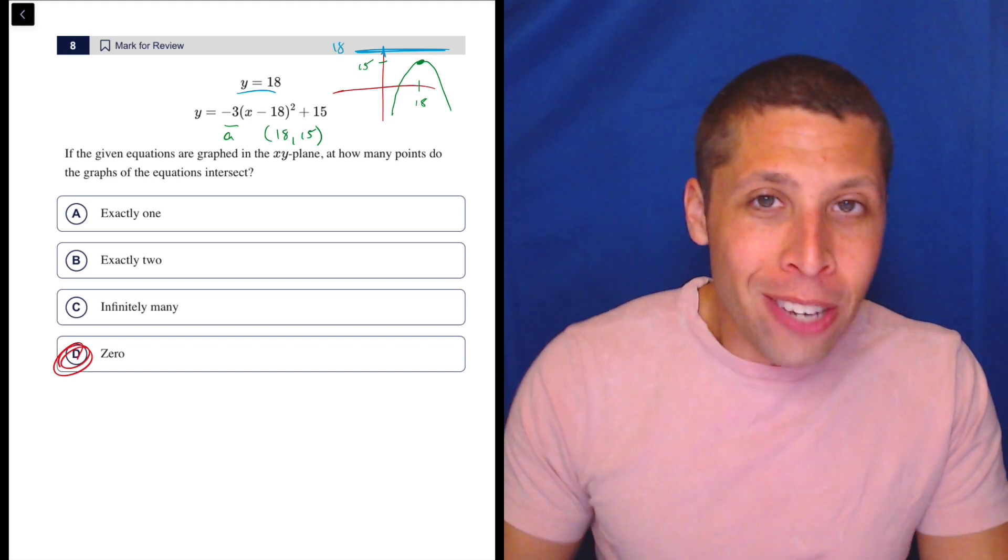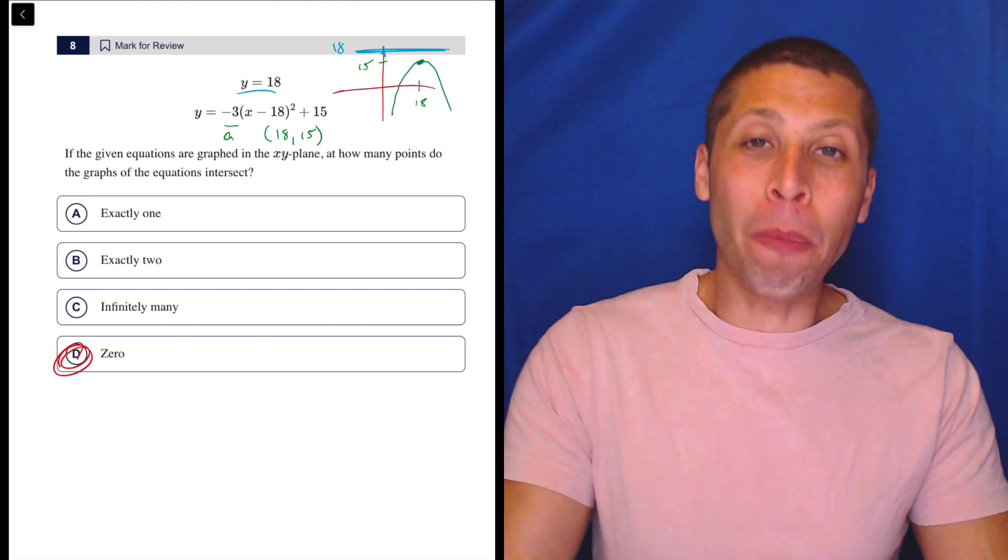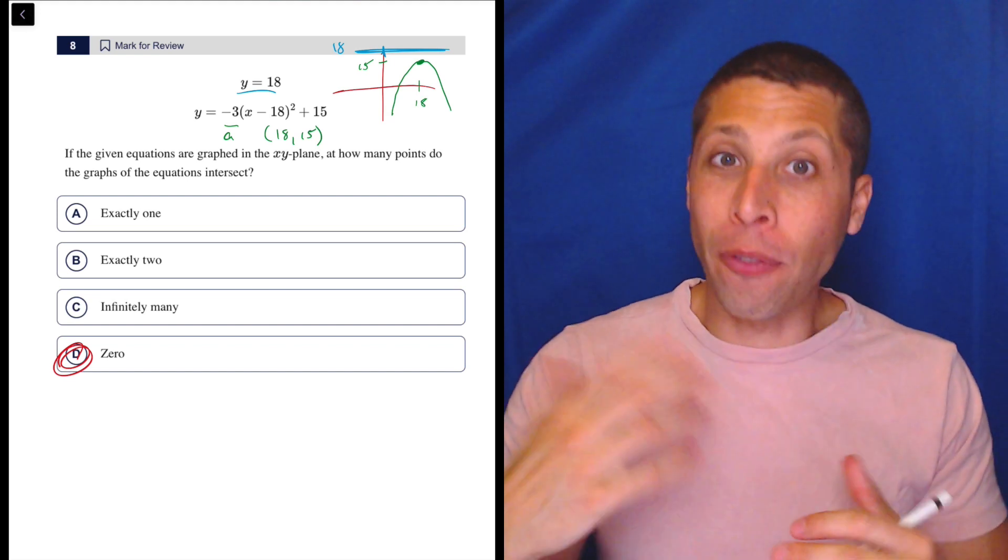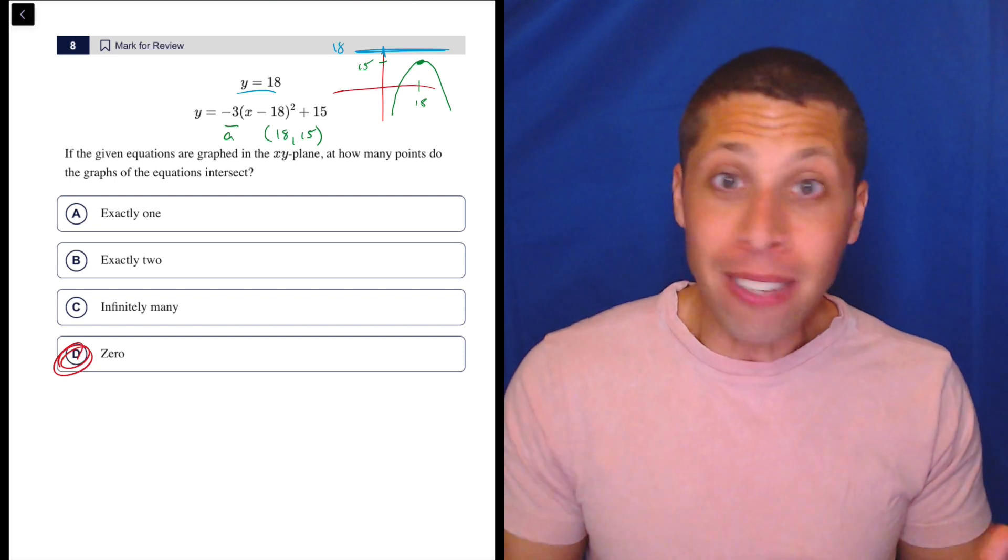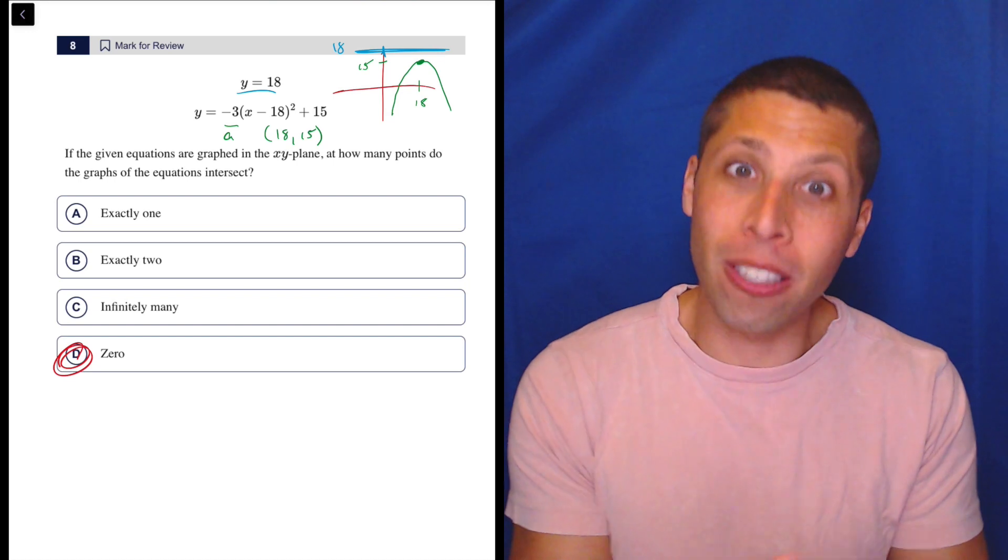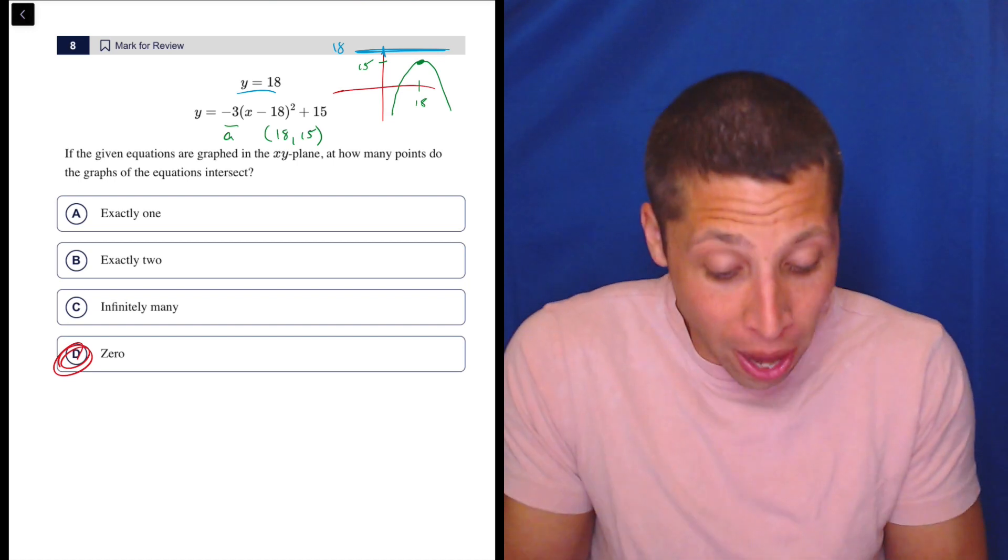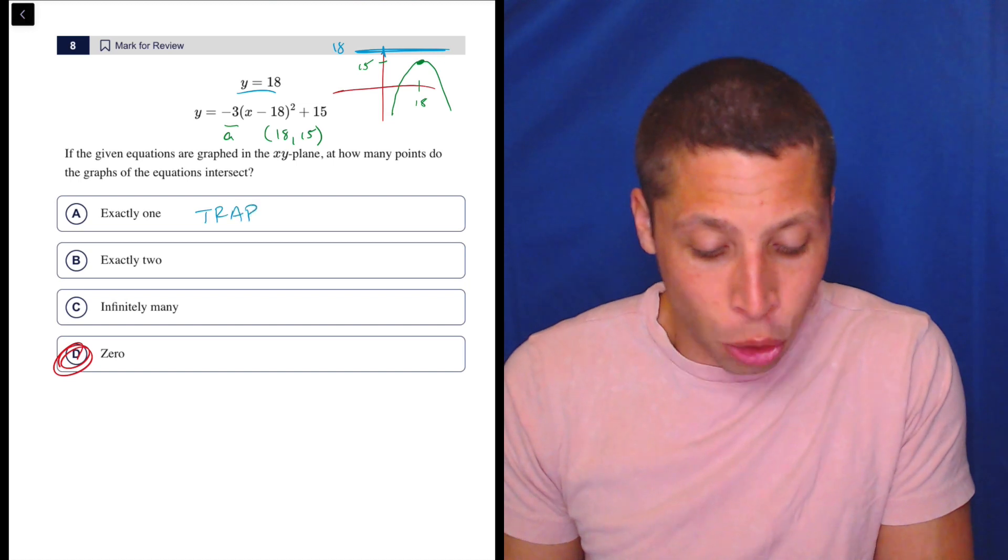But look at the equation. It has an 18 in it. That's not a coincidence. They did that on purpose because they know that if you're moving fast, you might confuse the x and the y. And you might think about 18 as, oh, if that's the vertex, then it hits this line once.